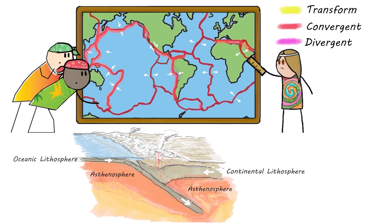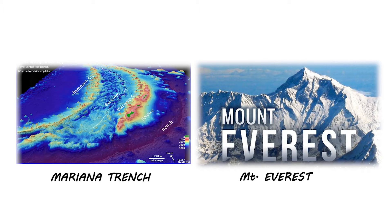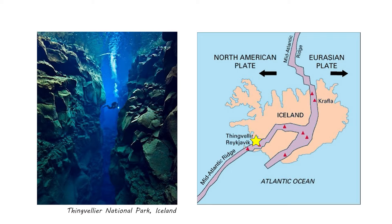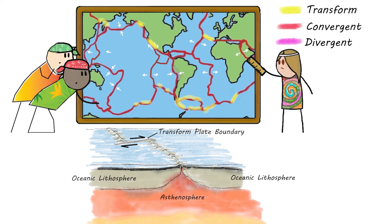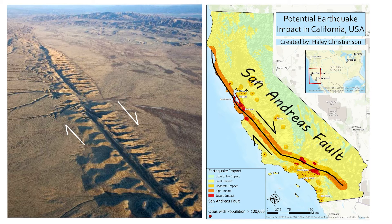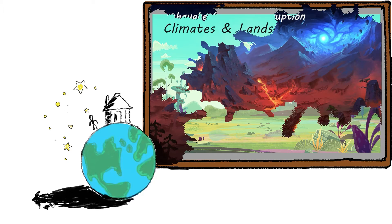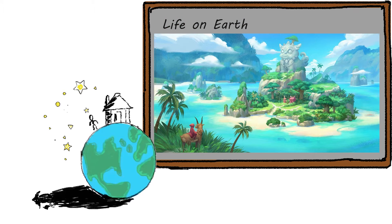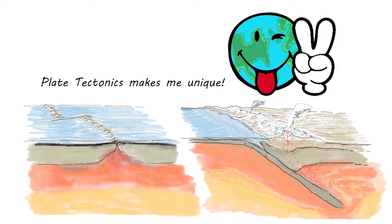There are three types of plate boundaries. Convergent plate boundaries occur where two plates move toward each other — these are where the highest and lowest places on Earth can be found, such as Mount Everest and the Mariana Trench. Divergent plate boundaries occur where two plates move apart from each other, such as where ocean spreading ridges are; a good example is the Mid-Atlantic Ridge. Transform plate boundaries are where two plates slide sideways past each other; a good example is the San Andreas Fault of California. Plate tectonics is important for understanding the environments and natural events around us and has played a critical role in nurturing life on Earth.